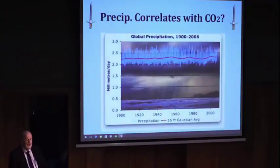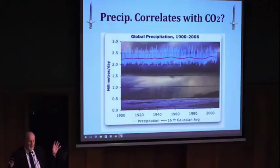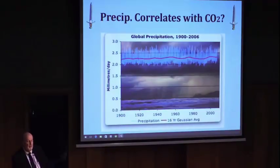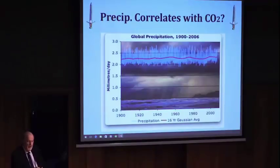This is precipitation. Precipitation is one of the big bugaboos of global warming. This is a hundred year period — precipitation flat. No change in precipitation over a hundred years.